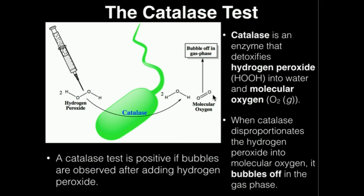Humans make catalase — we actually express this enzyme. Next time you skin your knee, most people take some hydrogen peroxide from those brown bottles and put it on the wound. You'll see bubbles produced, because your body produces catalase to protect from hydrogen peroxide that's naturally produced in your body. But taking some from the outside environment, like from the bottle, will still produce those oxygen bubbles.